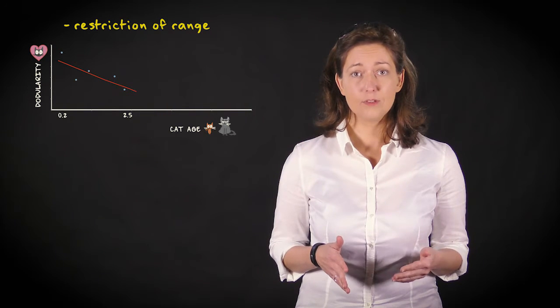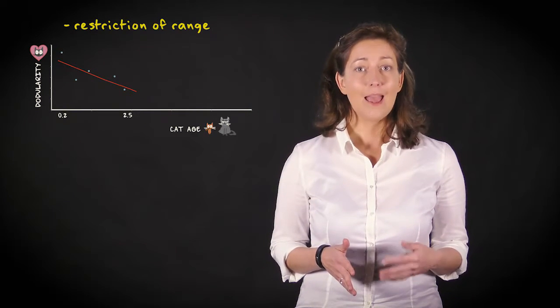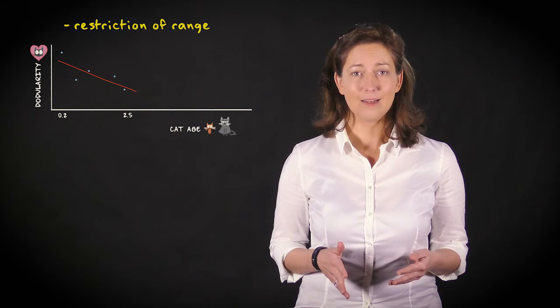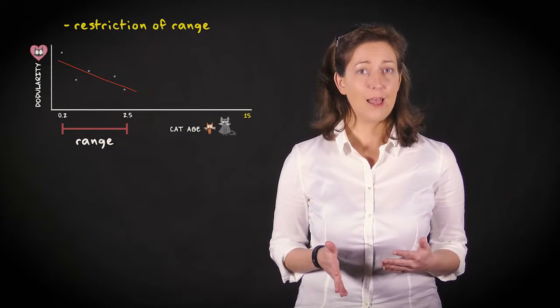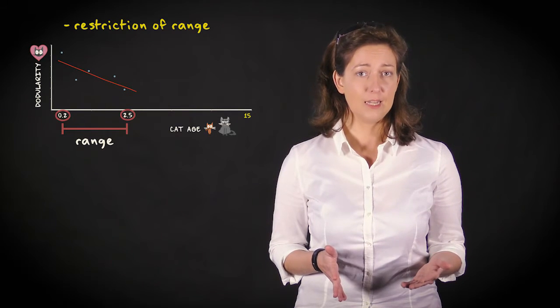cat age varied between three months and two and a half years. The average lifespan of an indoor cat is about 15 years, so our range is restricted. We're missing values between two and a half to 15 years.